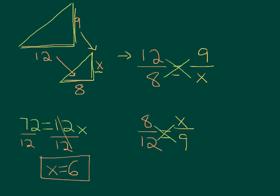And you can always check your answer. If you plug it back in, if X equals 6, you can just divide and see if you get the same decimal on both sides. So what is 12 divided by 8? It is 1.5. And then check what is 9 divided by 6? It is also 1.5. So because we got the same decimal on both sides, we know that 6 checks.